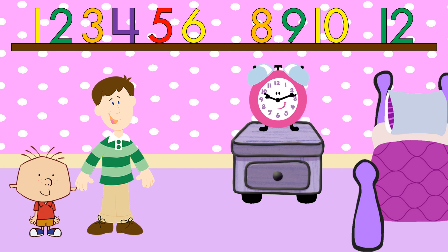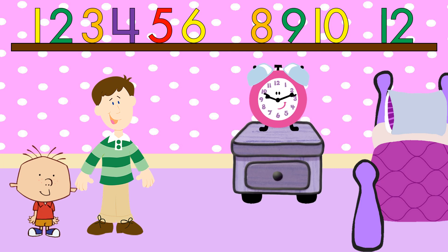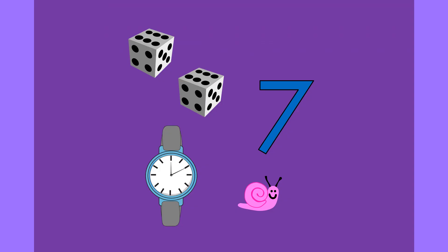Now we can continue counting. Count with us. One, two, three, four, five, six. Uh-oh, there's another number missing. What number comes after six? Seven! That's right, seven. I think I hear the number seven inside this drawer. Let's take a closer look. Wow, look at all this stuff inside. But where's the number seven? Can you find it? Over there! There's the number seven. How'd you get in there?